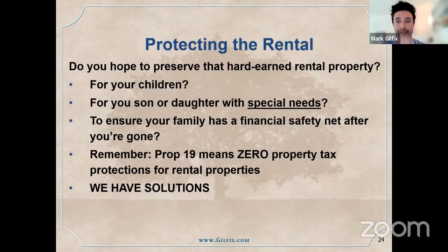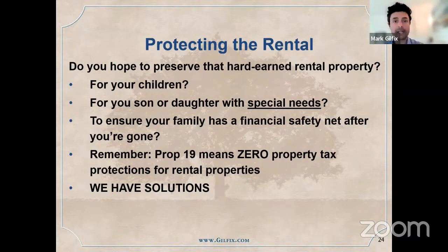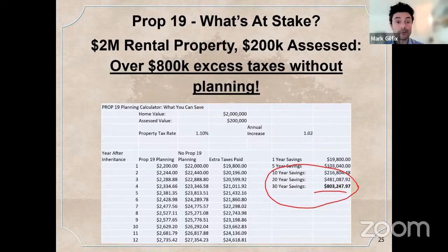For rentals, there are zero protections — you don't even get that first million dollars in protection that you do for a home. If you want to leave a rental to support a child with special needs, there are zero protections unless you plan ahead. We do have solutions for rental properties to prevent reassessment when you pass away. For example, a $2 million fourplex that's been in the family a long time with an assessed value of $200,000 — if you don't plan ahead, property taxes when you pass it to your kids would go up to about $20,000 to $22,000 a year, which is $800,000 over 30 years in extra taxes. It might not even be worth keeping — that's why people sell. Remember, you only have one residence; a cabin in the mountains gets the same analysis as a rental: no exceptions, complete reassessment.